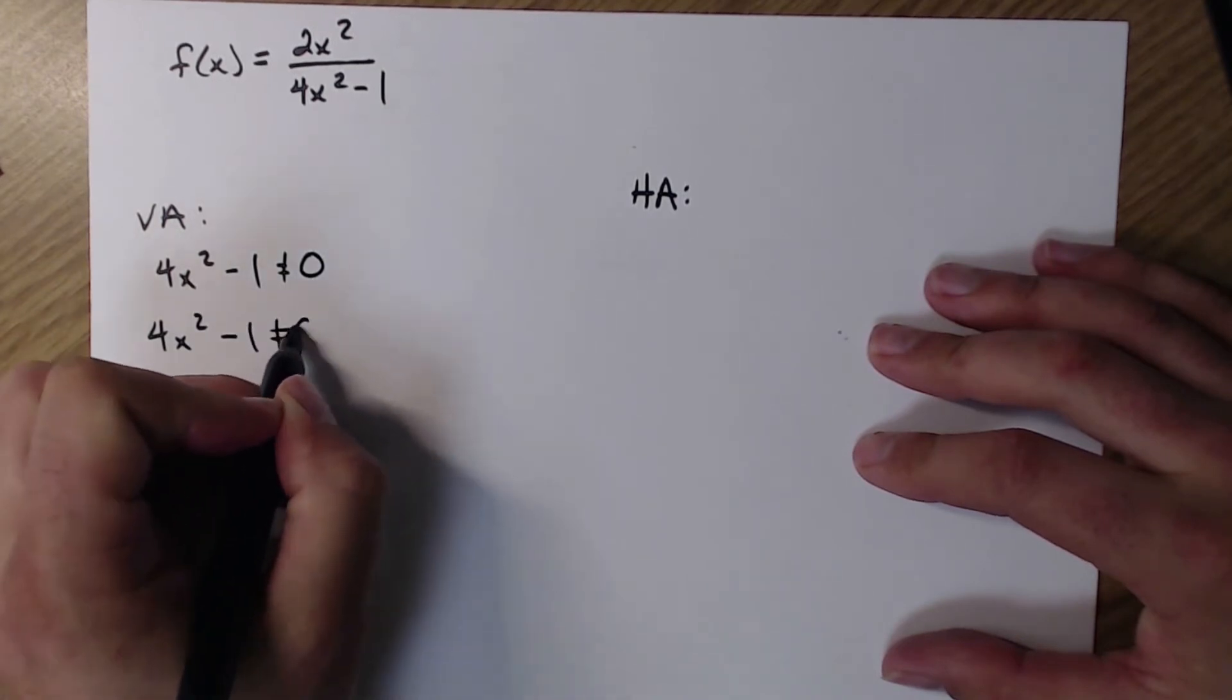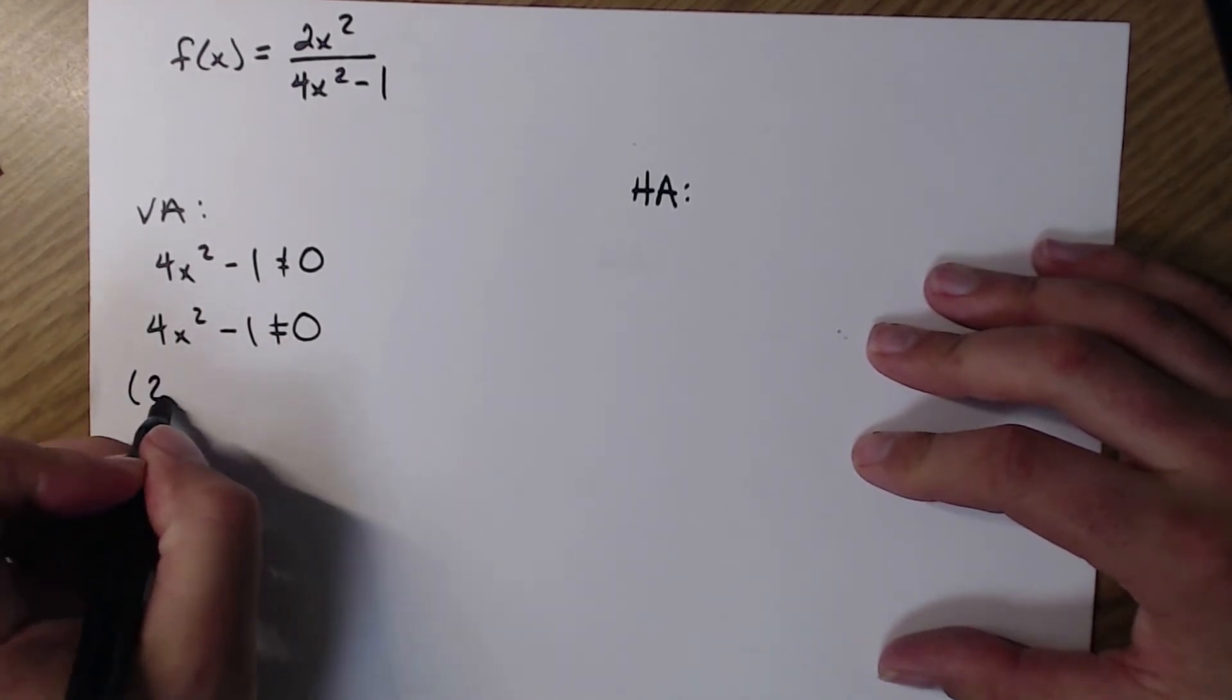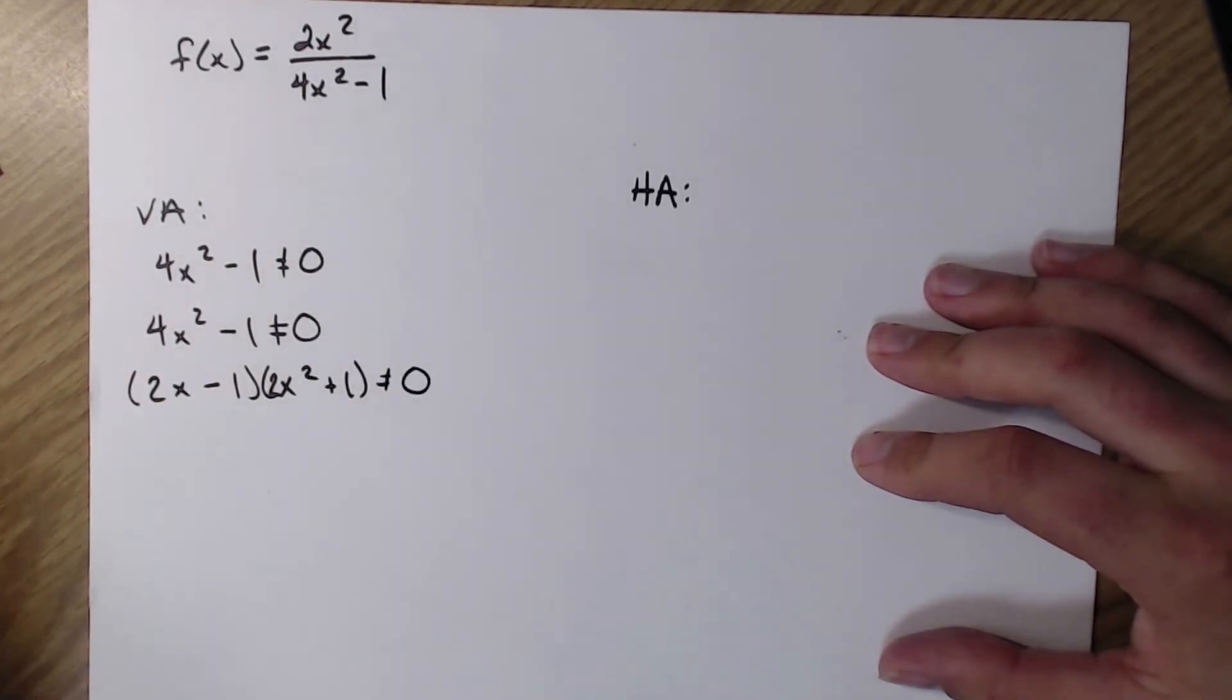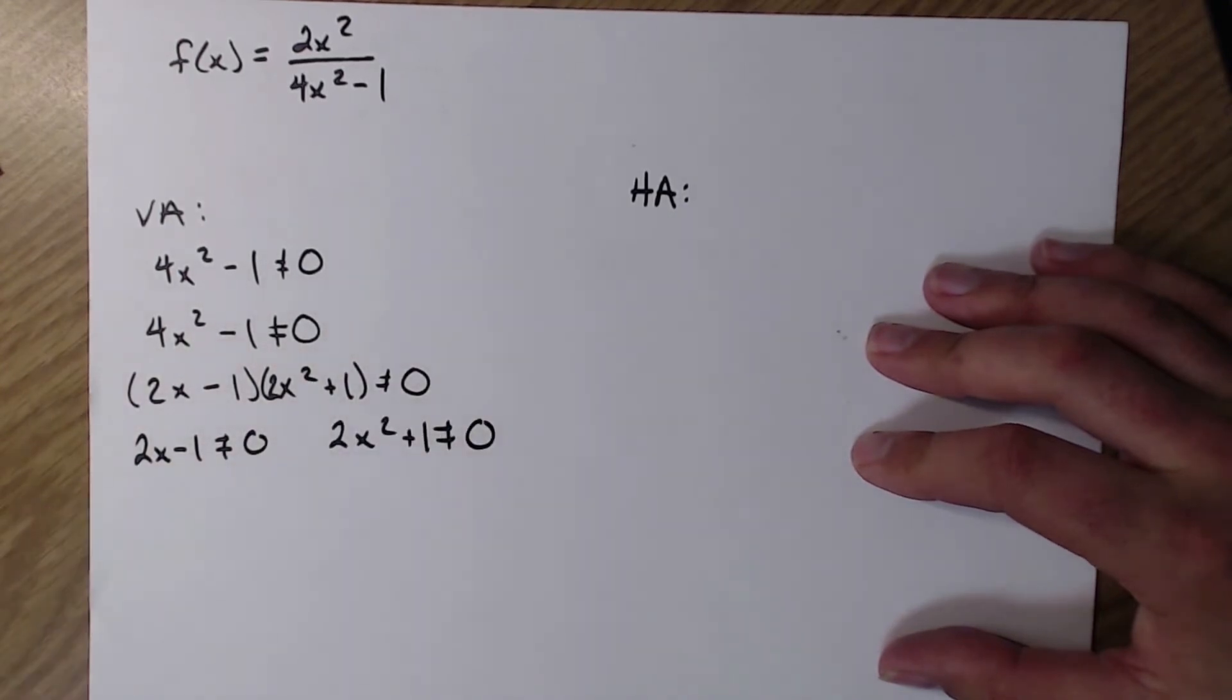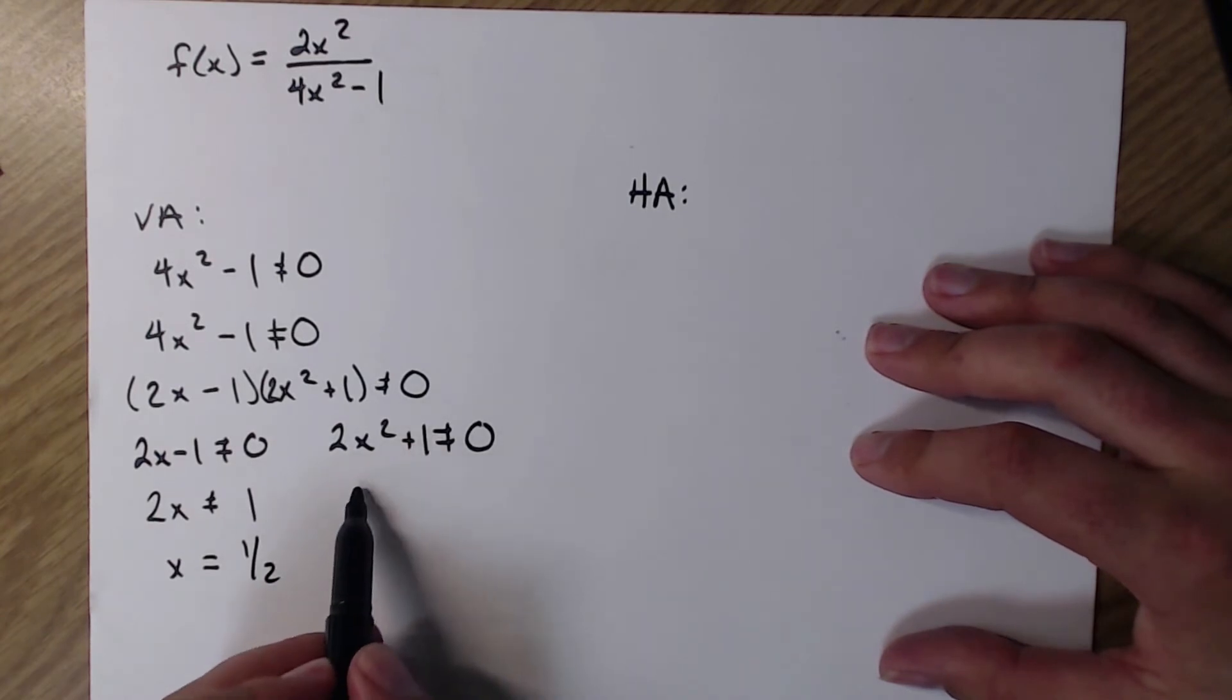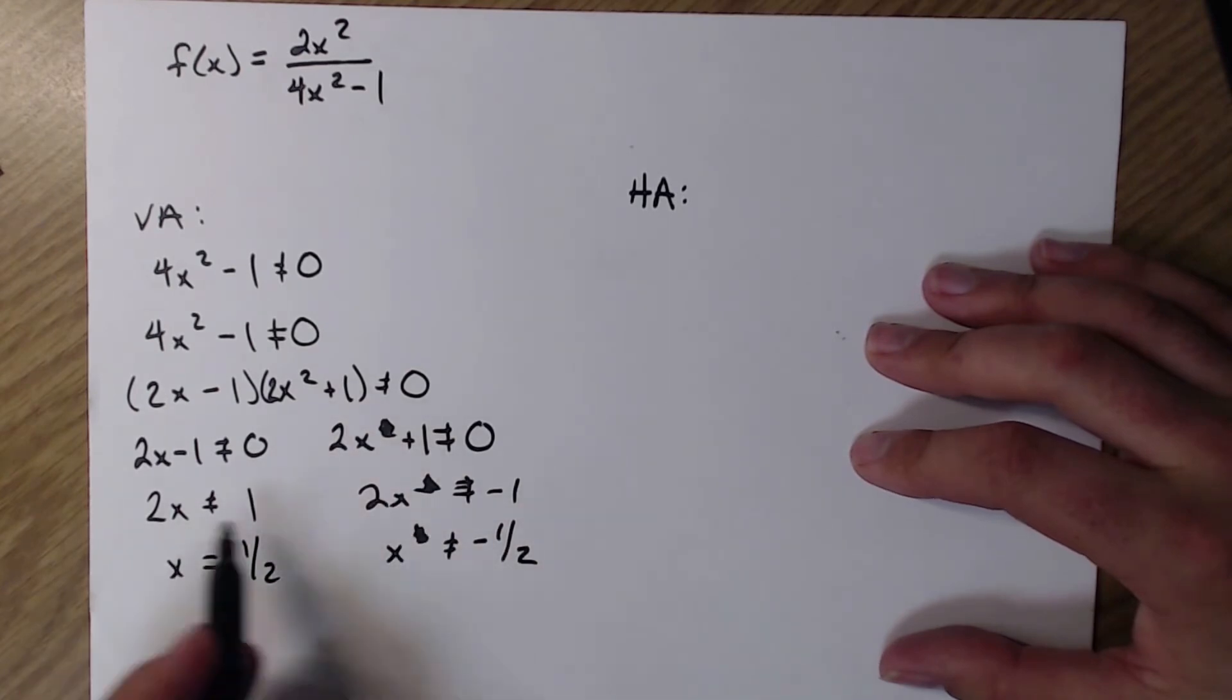So 4x squared minus 1. Oh, that actually factors. I want to do it the factoring way. Or I could add the 1 and divide by 4 and square root. But I'm going to factor instead because that will remind us of difference of squares. I factored it using difference of squares. I set each piece not equal to 0. Solving for my x. That's not squared. So there are my 2.